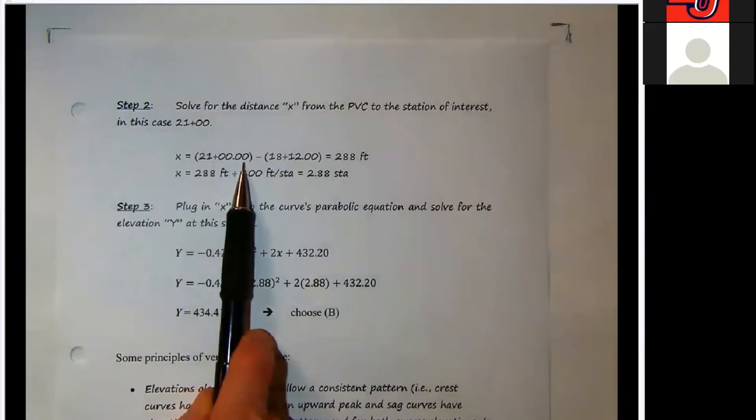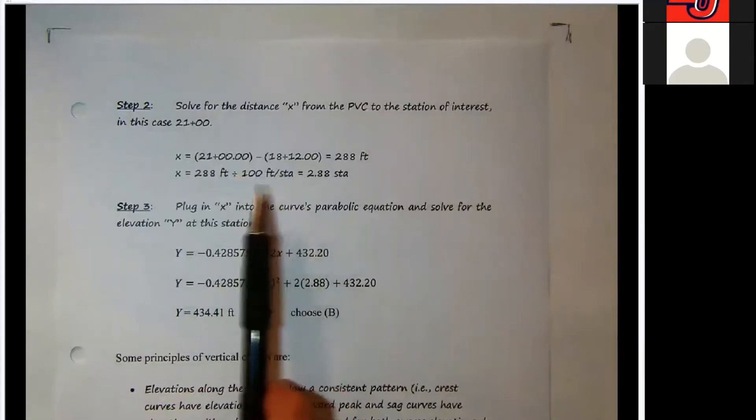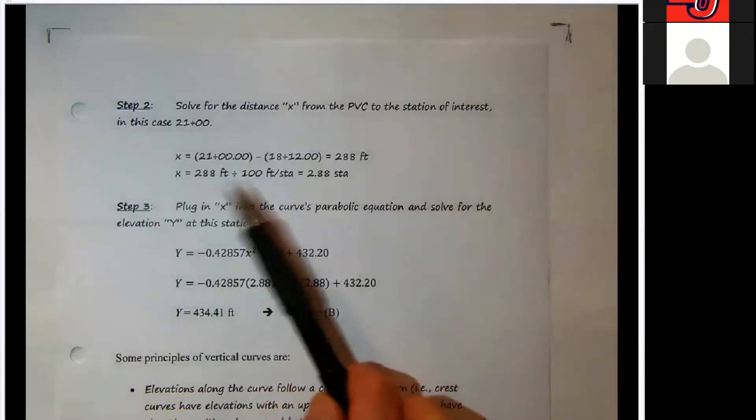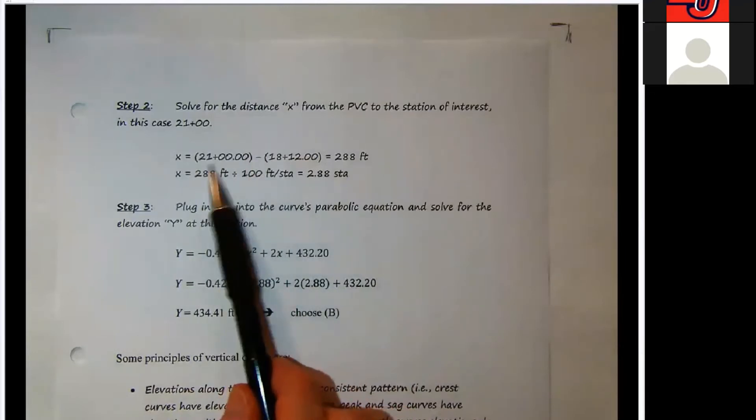In the English system, we measure to the hundredth of a foot. In the metric system, we measure three decimal places over here, but hopefully you won't see too many metric problems, particularly with vertical horizontal curvature.